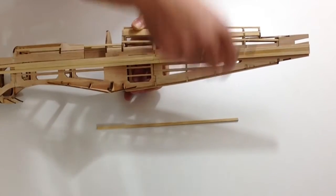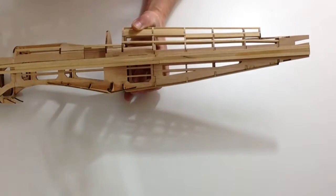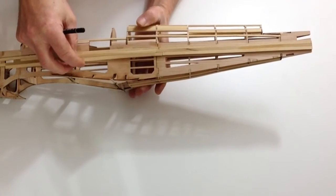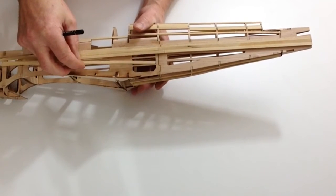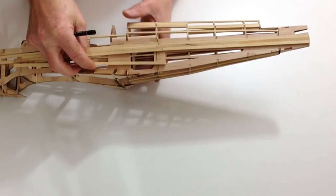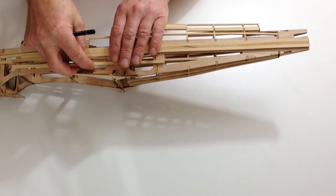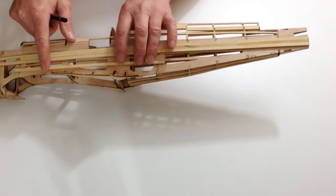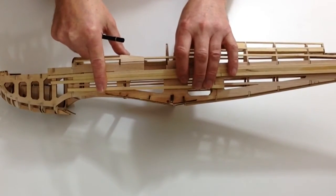Do exactly the same for the other side. Next, take another 2x5mm strip and notice the position of where this goes as per your instructions. Cut that to length and glue that down into position.